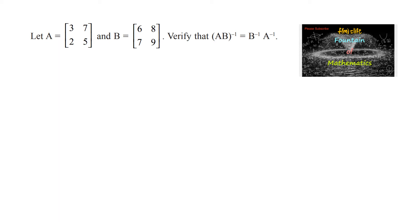Let A be the 2 by 2 matrix [3, 7; 2, 5] and B be the 2 by 2 matrix [6, 8; 7, 9]. Verify that (AB) whole inverse is equal to B inverse into A inverse.